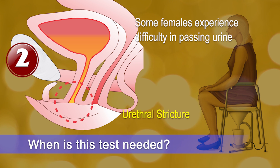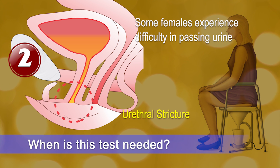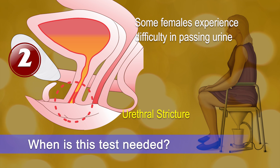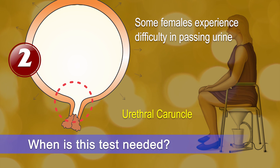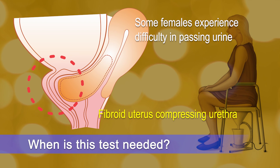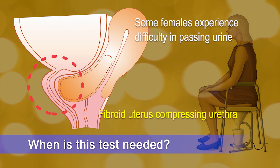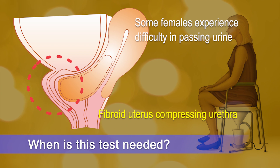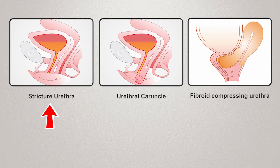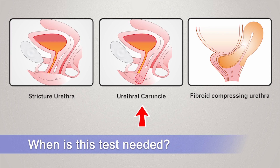There are some ladies who experience difficulty in passing urine. The common reasons include narrowing occurring in their urethral passage, developing a small tumor-like disease in their urethral passage, or large fibroids in their uterus which compress the neck of the urinary bladder. So in a female, stricture of the urethra, a tumor on the outlet of the urethra, or a mass in the uterus can give rise to difficulty in passing urine, and for these conditions we perform uroflowmetry.